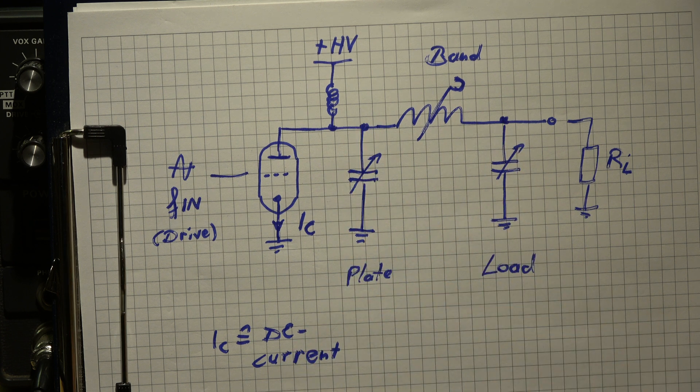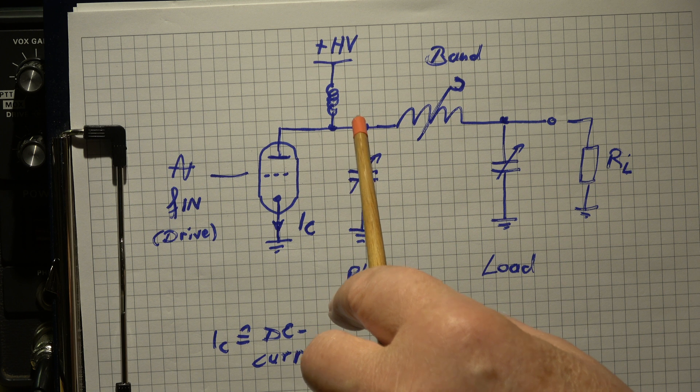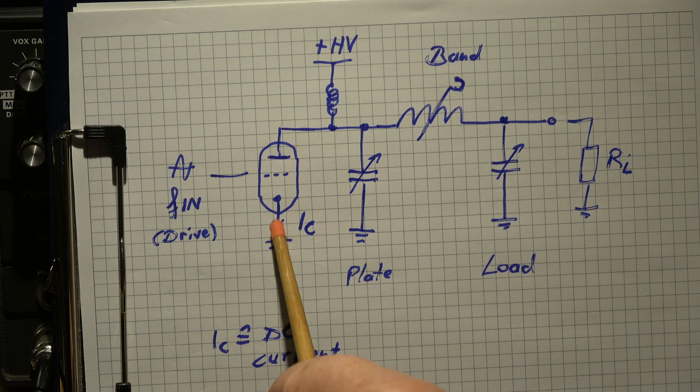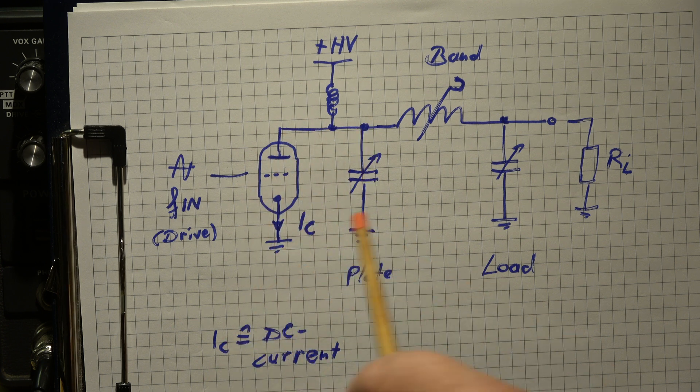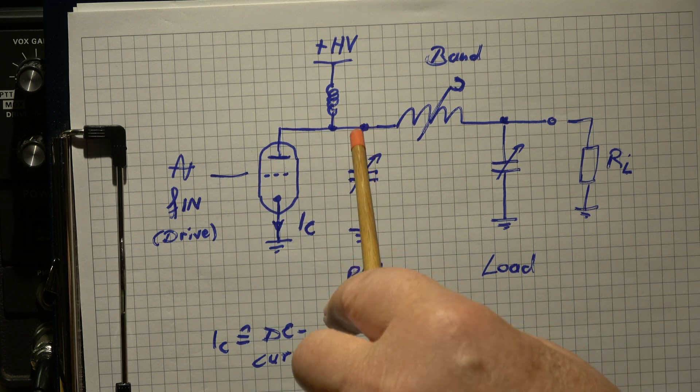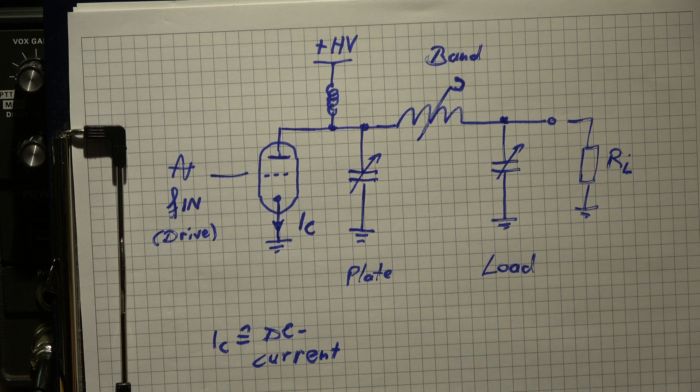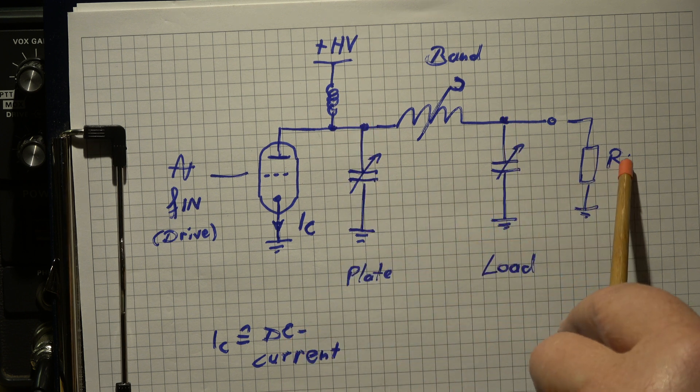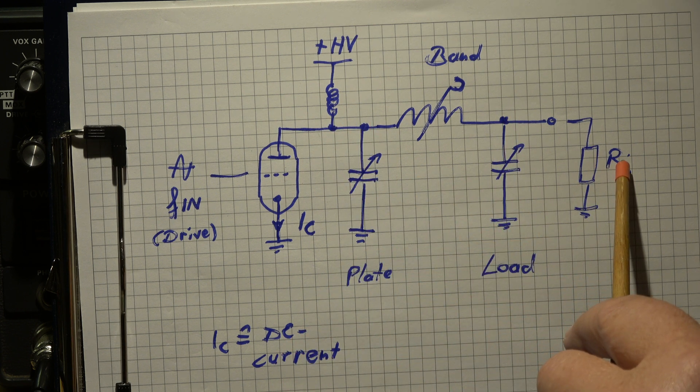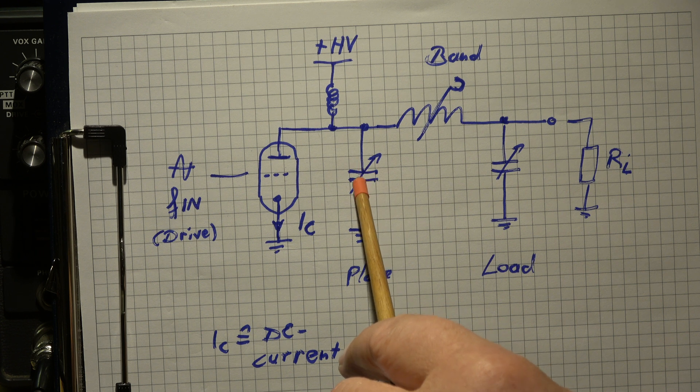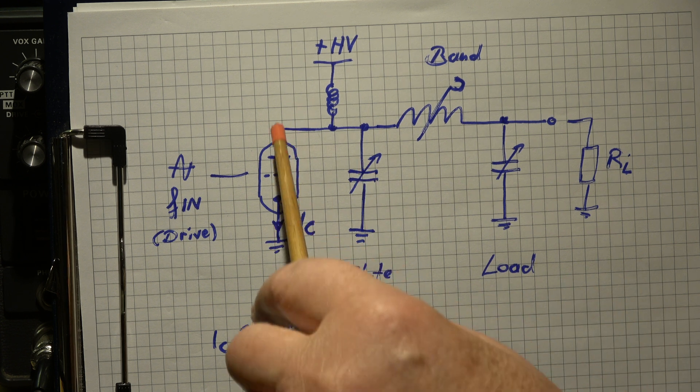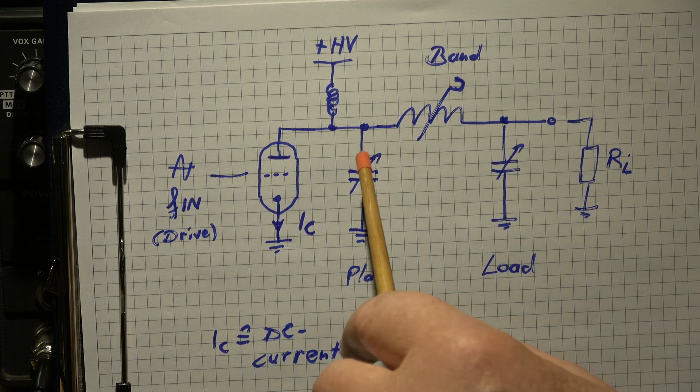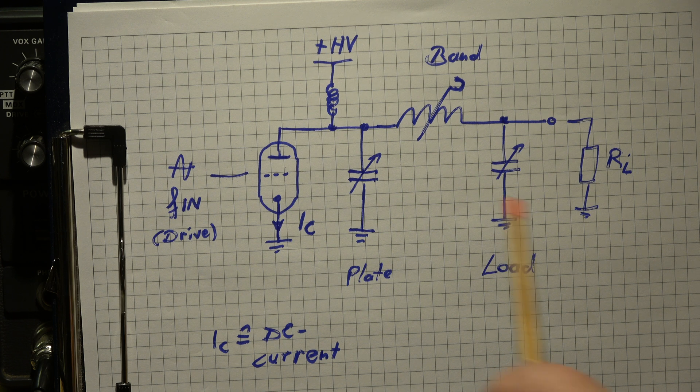And this means maximum impedance here and this means minimum current in the tube, because the tube sees at 14 megahertz a rather high resistance. That is wanted. And this high impedance is transferred to the output. When we detune this capacitor and generate here more current, then we have less output because the circuit is not tuned to the resonant frequency.